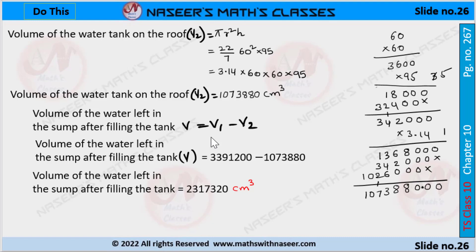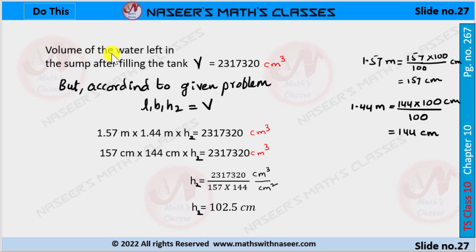Now we find the volume of water left in the sump. V = V1 − V2. Substituting the values: 3,391,200 − 1,073,880 = 2,317,320 cubic centimeters. This is the volume of the water left in the sump after filling the tank.